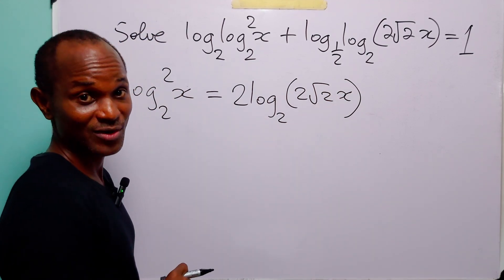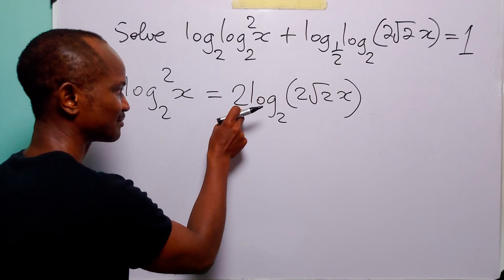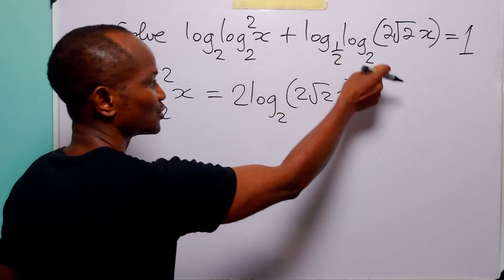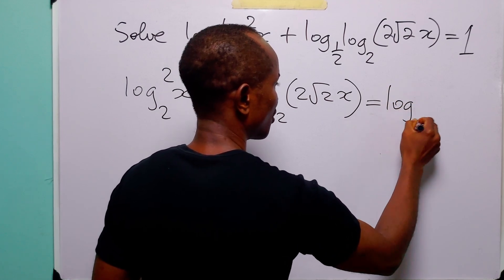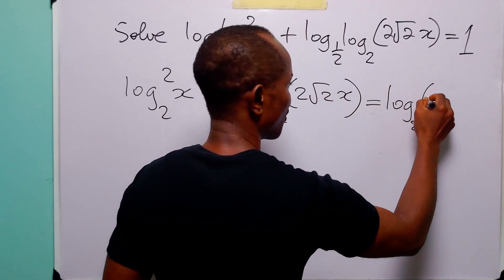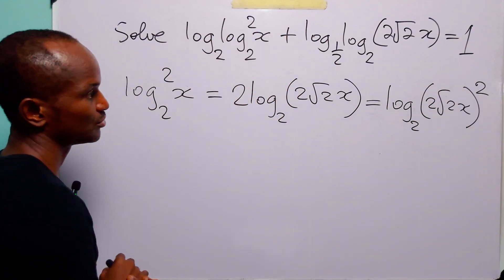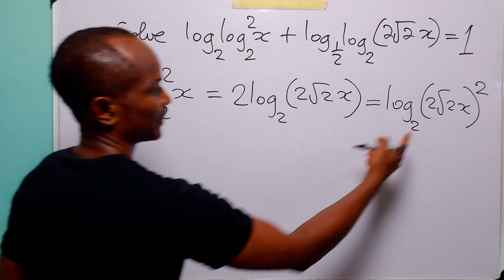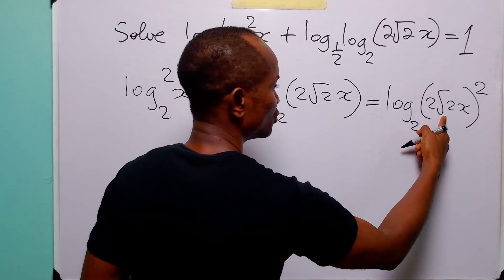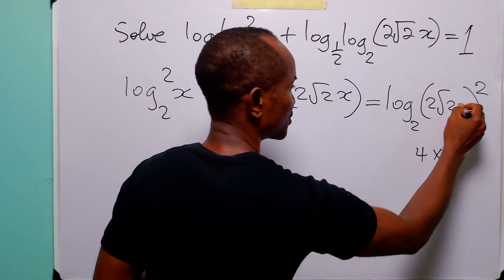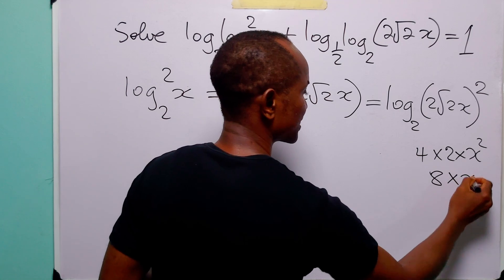Looking at the right-hand side, we can apply the power law in reverse and take the multiplier 2 up to become an exponent. So this right-hand side is equal to log to base 2 of 2 root 2 times x raised to power 2. Evaluating: 2 to power 2 is 4, root 2 to power 2 is 2, and we have x squared, so this is equal to 8 times x squared.